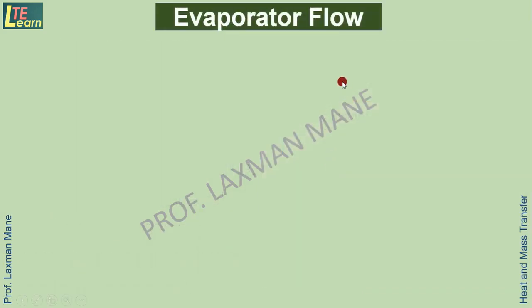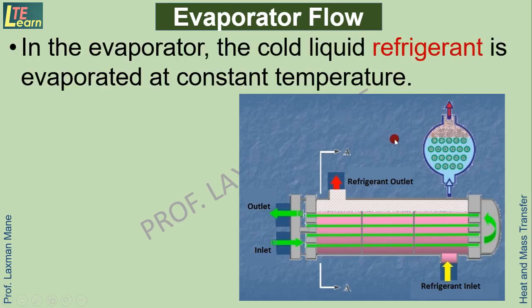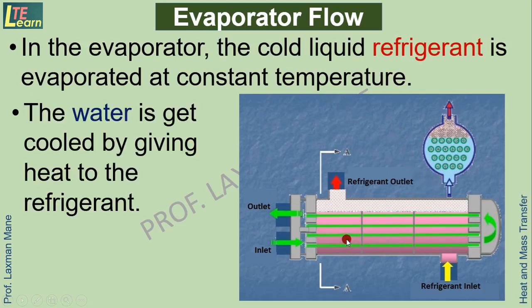In the evaporator section, the cold liquid refrigerant passes inside the shell and tube heat exchanger. Since its boiling point is very low, it is a very cold refrigerant that absorbs heat from the water line and gets vaporized. So the cold liquid refrigerant vaporizes at a constant temperature, and the water is cooled by giving its heat to the refrigerant, producing chilled water which is used for the central air conditioning system.